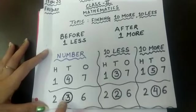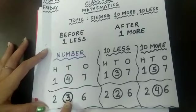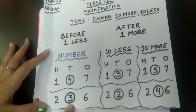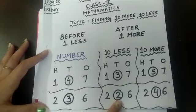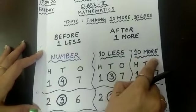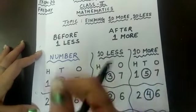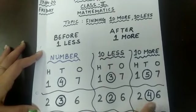In the same way, for 236, we will see the tens place. 3 is at the tens place. What comes before 3? 2. So this became 226. And for finding 10 more, what comes after 3? 4. So this became 246.